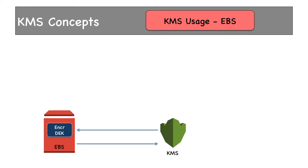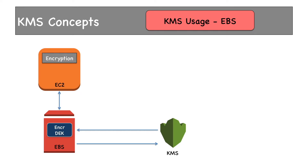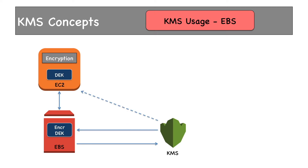EBS cannot work alone — it has to be attached to an EC2 instance. After attachment, every encryption and decryption is handled by the EC2 instance. For any encryption or decryption operation, EC2 sends the encrypted DEK to KMS with either an encrypt or decrypt request. AWS KMS will decrypt the encrypted DEK if the request is for decryption, and send the plaintext DEK back to EC2.